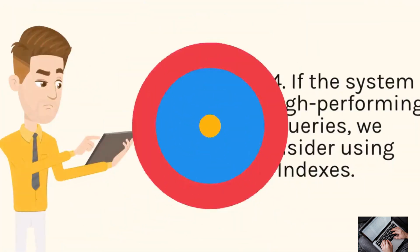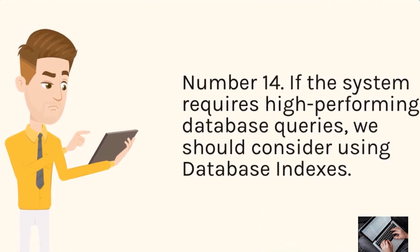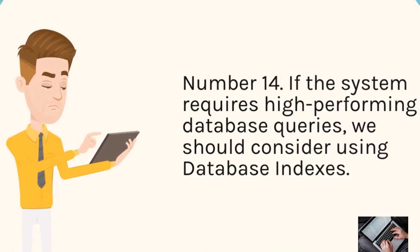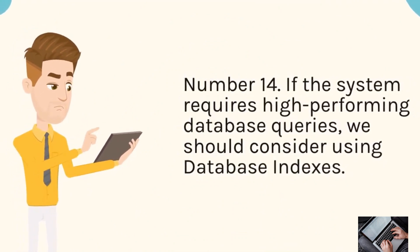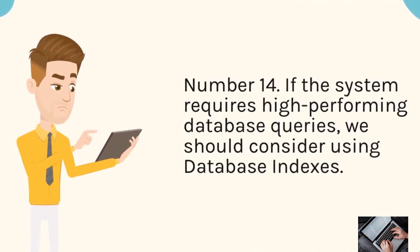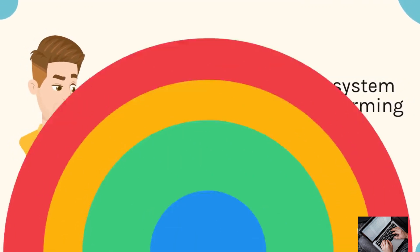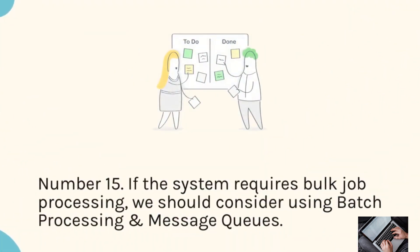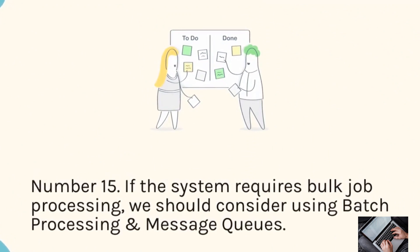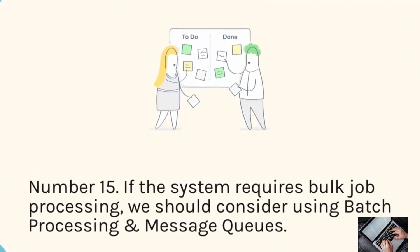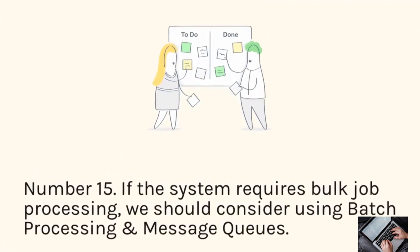Number 14: If the system requires high-performing database queries, we should consider using database indexes. Number 15: If the system requires bulk job processing, we should consider using batch processing and message queues.